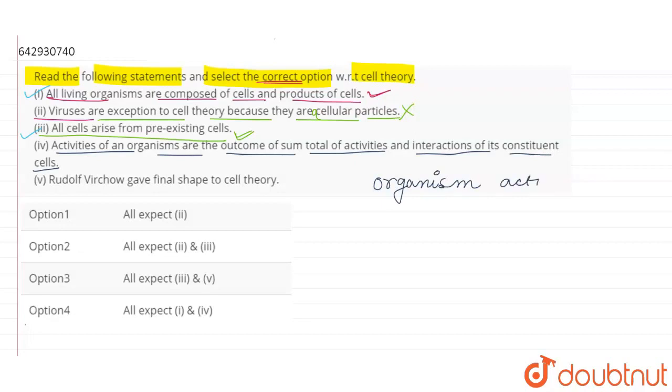So this is a subtype of the organism. Rudolph Virchow gave the final shape to the theory. So yes, it is a right statement. Three scientists were Schleiden, Schwann, and Rudolph Virchow. Rudolph Virchow gave the final shape.